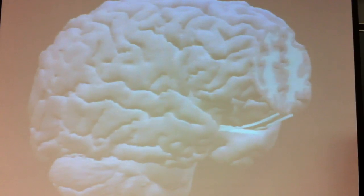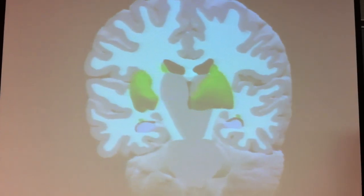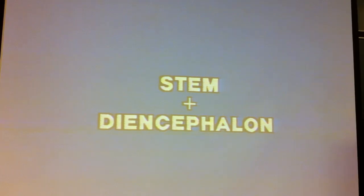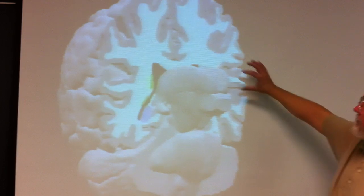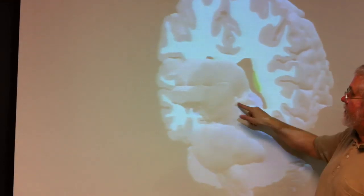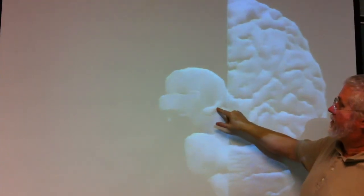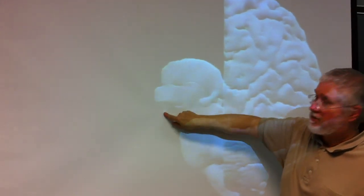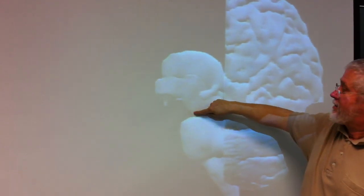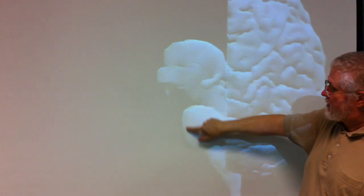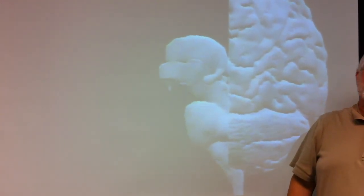You can see it's missing its globus pallidus. Putamen. Thalamus. Lateral geniculate. Medial geniculate. Hypothalamus. Infundibulum. This would be the cerebral peduncle. And of course this is the pons.